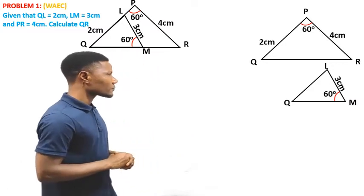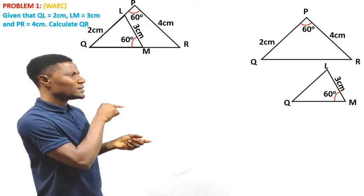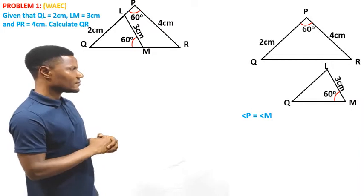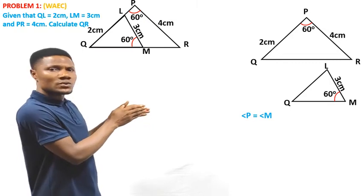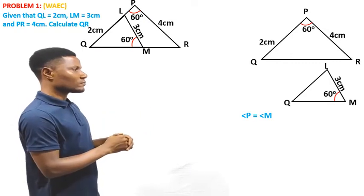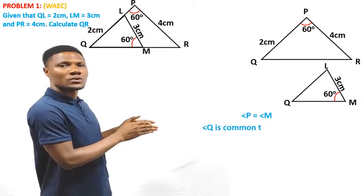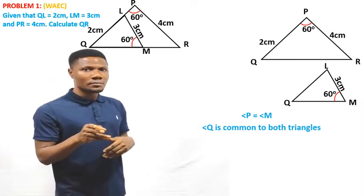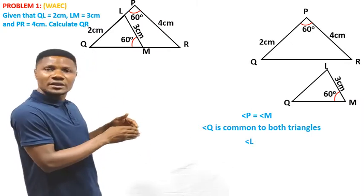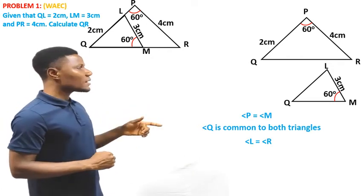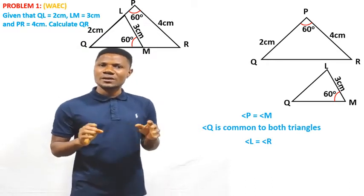If you look at the triangle very well, you discover that angle P is equal to angle M. Angle P from the bigger triangle is equal to angle M from the smaller triangle. Also, angle Q in the smaller triangle is equal to angle Q in the bigger triangle — Q is common to both. Then angle L will be equal to angle R. If that is the case, we need to identify our corresponding sides, and once we do that, the problem is solved.